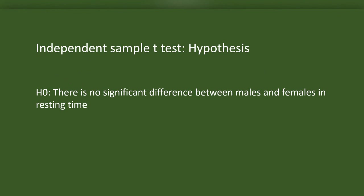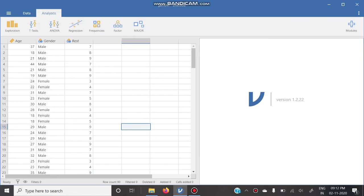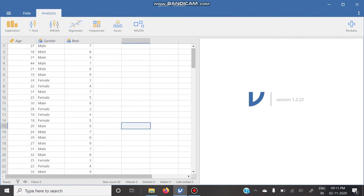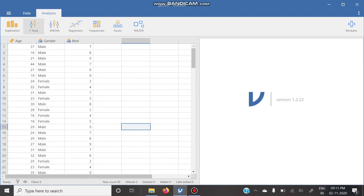We will see how to do the analysis. This is an open source software, its name is Jamovi. It is here. We can download it from the website of Jamovi directly, free of cost. See, this is the data on resting time and this is the gender. To do independent sample t-test, the option is here: T-tests. We have to click on that. Here, t-test, then independent sample t-test.